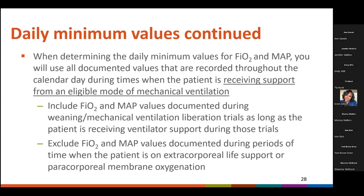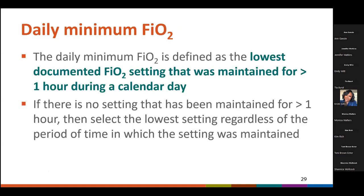When determining the daily minimum values for FiO2 and MAP, you will use all documented values that are recorded throughout the calendar day during times when the patient is receiving support from an eligible mode of mechanical ventilation. You'll include FiO2 and MAP values documented during weaning or mechanical ventilation liberation trials, as long as the patient is receiving ventilator support during those trials. You'll exclude FiO2 and MAP values documented during periods of time when the patient is on extracorporeal life support, such as ECMO or paracorporeal membrane oxygenation.